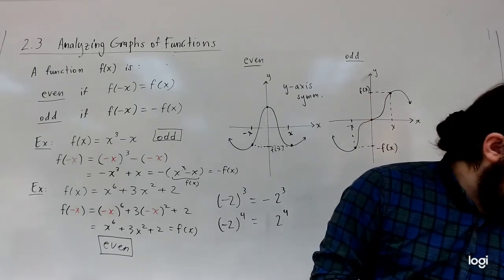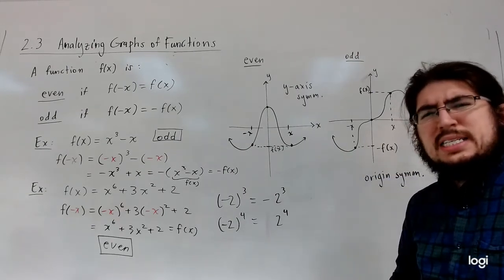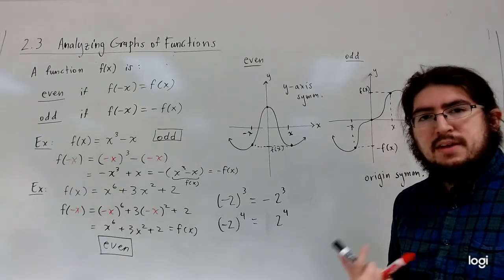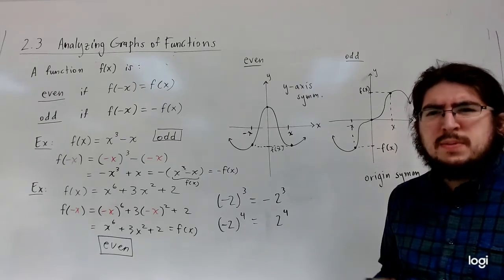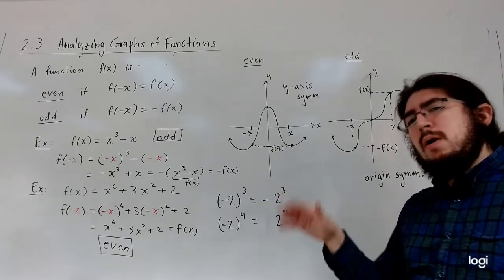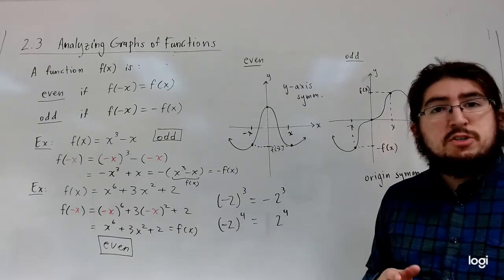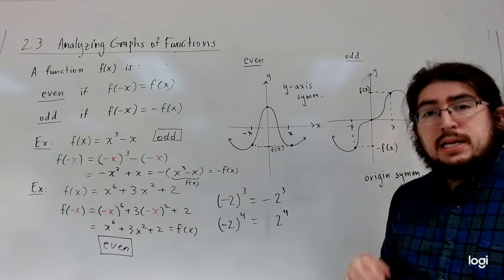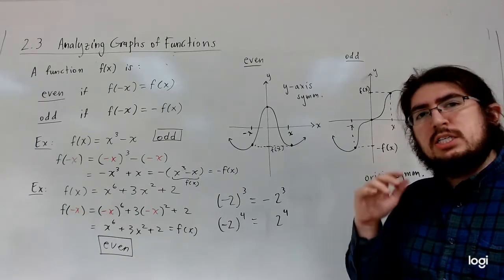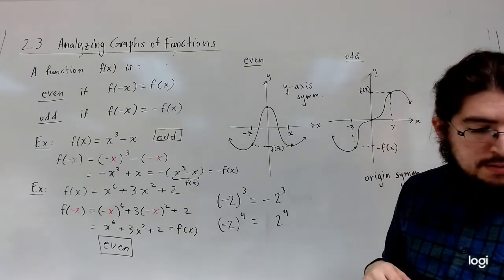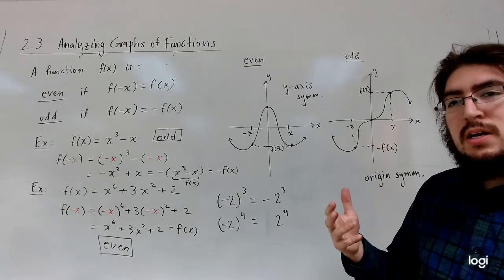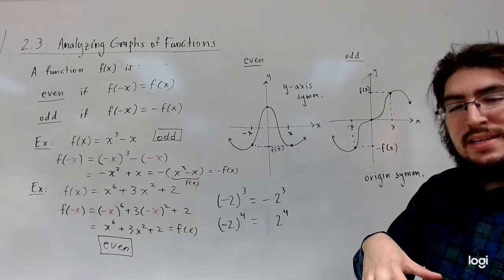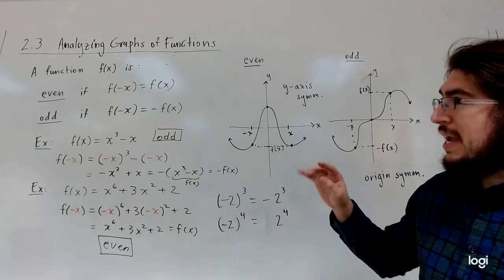And that's the last thing for 2.3. Really, the biggest thing here was zeros, because we'll be using that vocabulary a lot later on. Max, min, increase, and decrease don't come up too often, but increasing, decreasing, and constant do come up a lot in calculus — so introducing the idea here plants the seed. Even and odd will come up later as well.